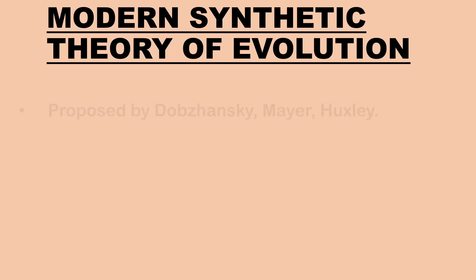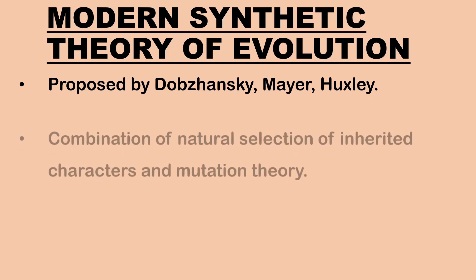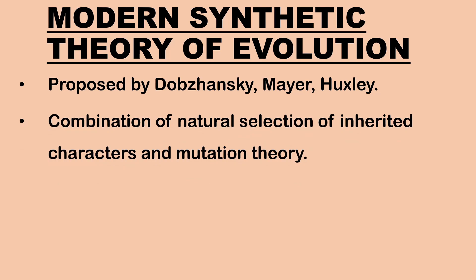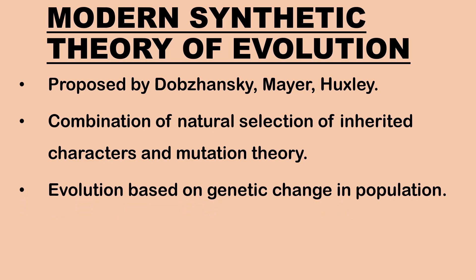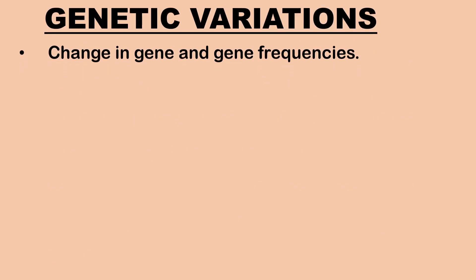Now let us learn about the Modern Synthetic Theory of Evolution. This was put forward by Dobzhansky, Mayr, Huxley and others. It is a theory of organic evolution by natural selection of inherited characters along with the mutation theory. It explains evolution based on genetic change in populations, which leads to the origin of new species. Modern Synthetic Theory consists of three main concepts: genetic variations, natural selection and isolation. The change in gene and gene frequencies is called genetic variation.